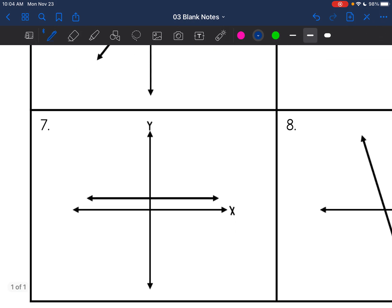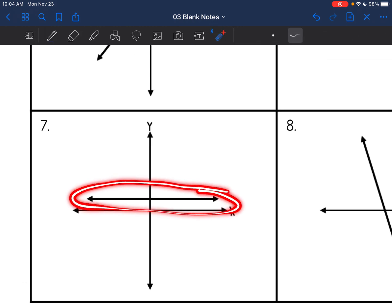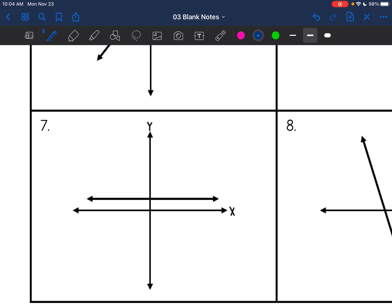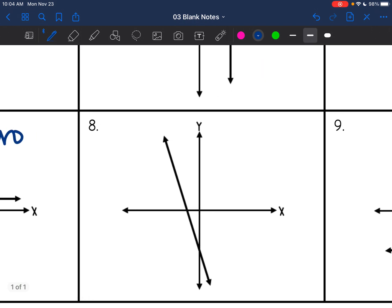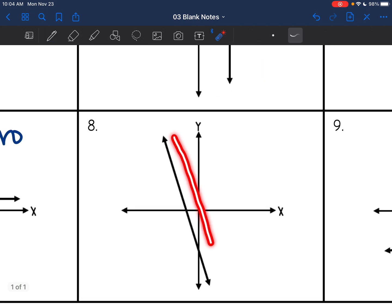Okay, and then number seven, again, I have this zero incline line. So that is a zero slope. And then number eight, this is going down pretty drastically. So this is a negative line.